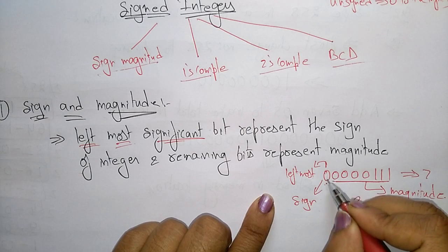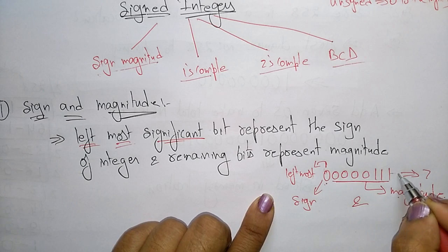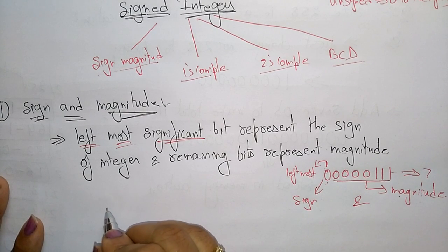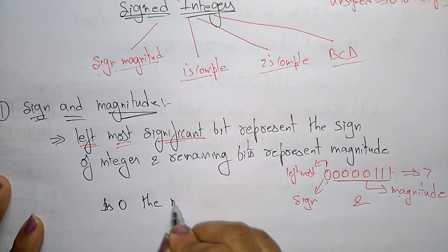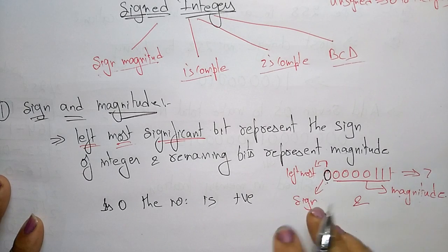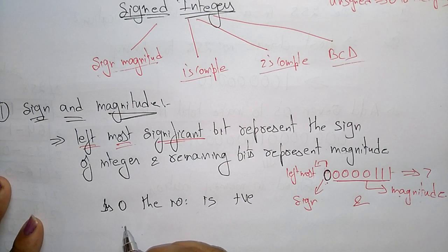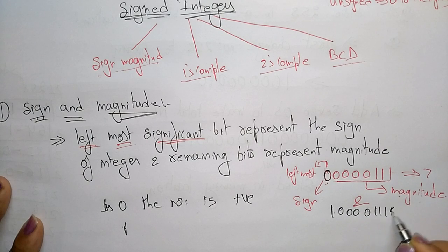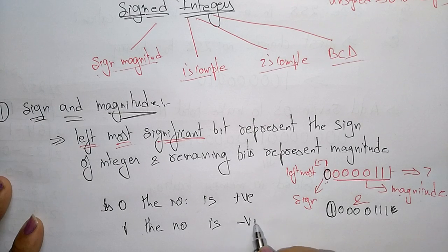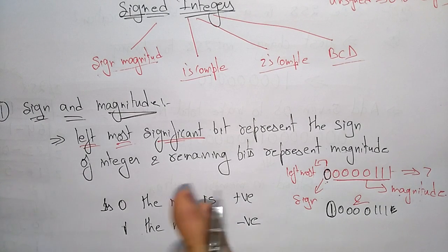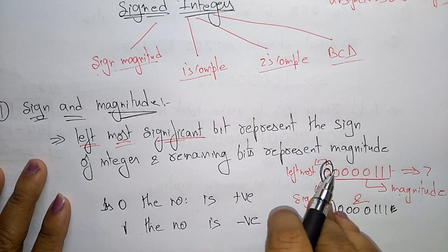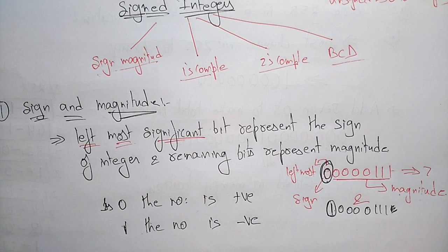So the leftmost bit is the sign and the remaining bits are the magnitude. If the leftmost bit is 0, the number is positive. If the leftmost bit is 1, the number is negative. That is why we call it sign and magnitude representation.